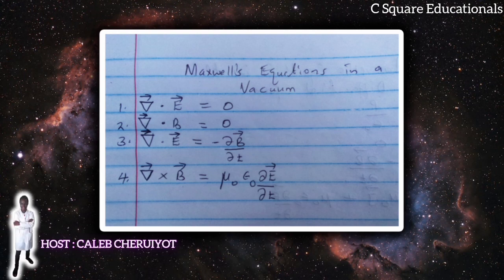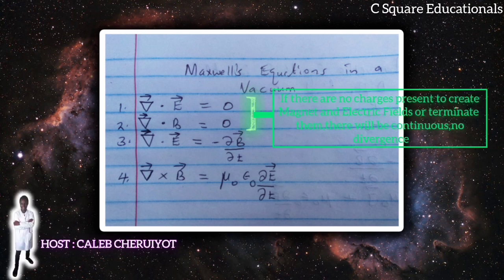Our equations are now simpler. The first and the second equations are the divergence of electric and magnetic fields. These two are telling us that if there are no charges present to create magnetic and electric field lines or terminate them, there will be no divergence. The fields will be continuous. They will not start or end. Astonishingly, Maxwell's equations, even in completely empty space, can define and allow the existence of magnetic and electric fields.